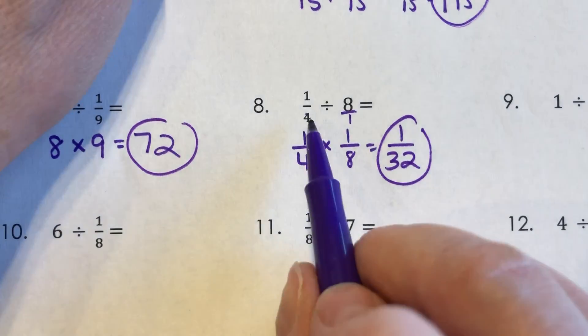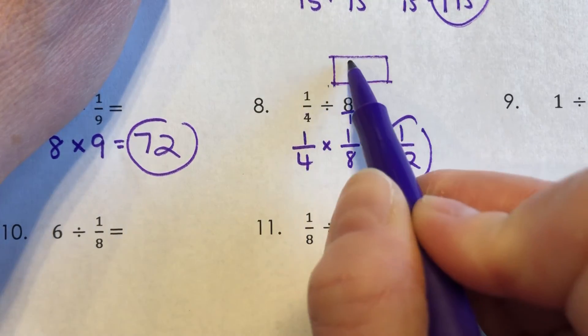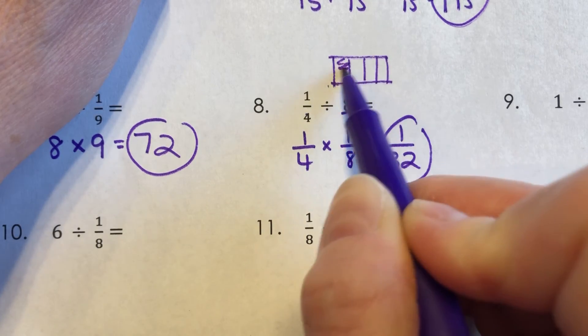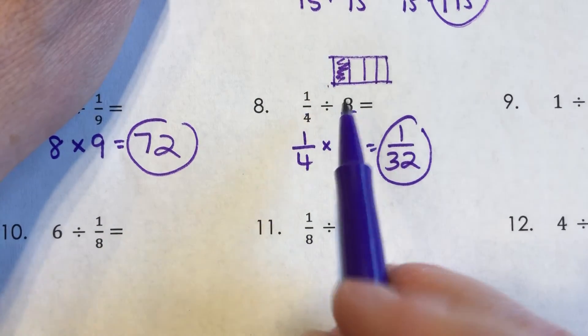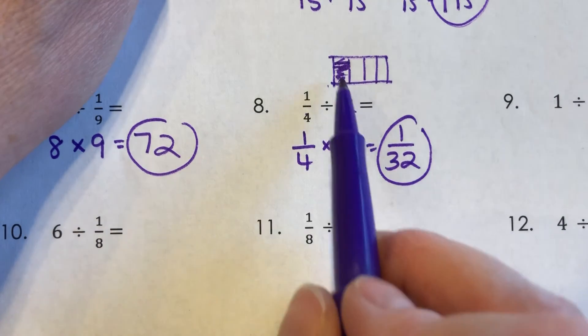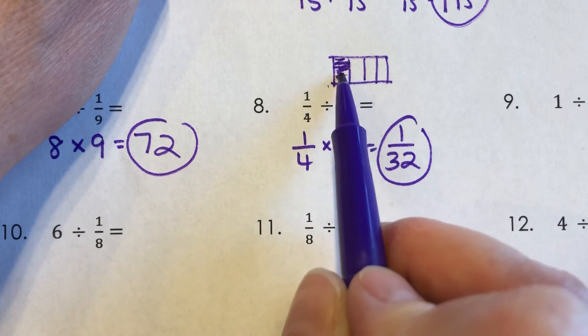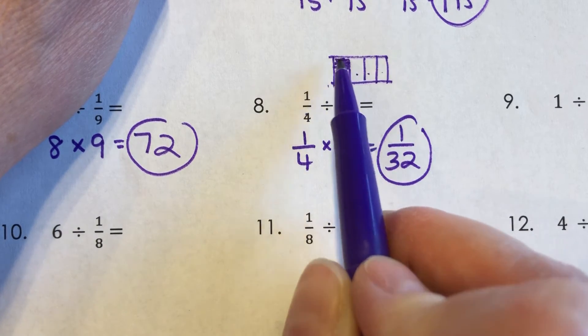That should be your final answer. And if you think about it, if you have one fourth, so like you don't have to draw this, but if you have one fourth and I divide that by eight, I'd be cutting this up into eight pieces. And I would end up with one out of, I'd have to cut all those into eight. So eight, 16, 24, 32, I'd have one out of the 32.